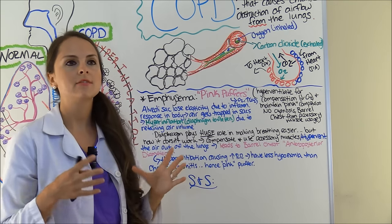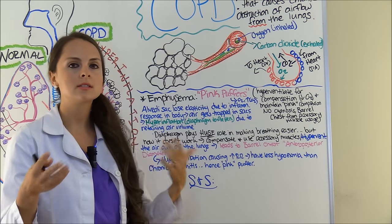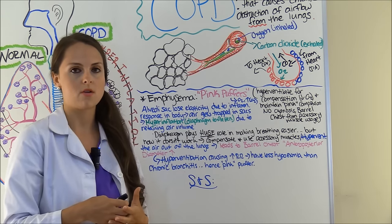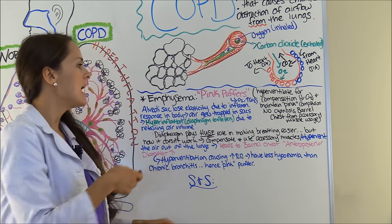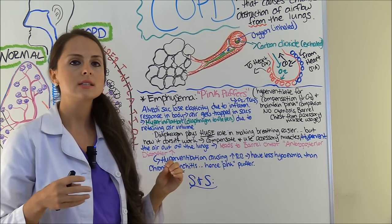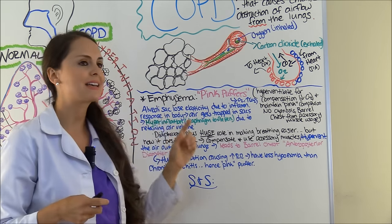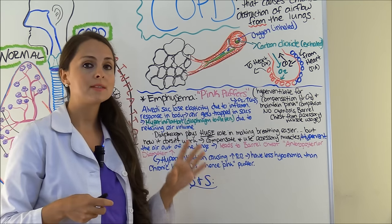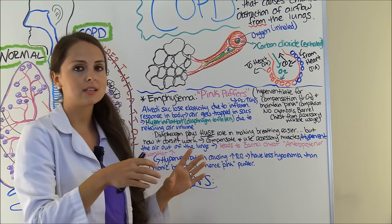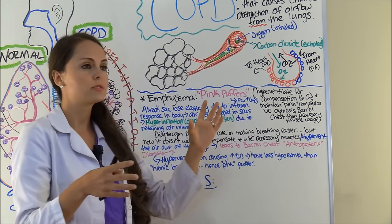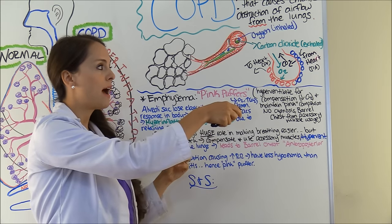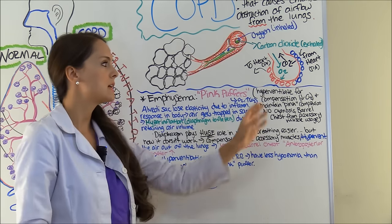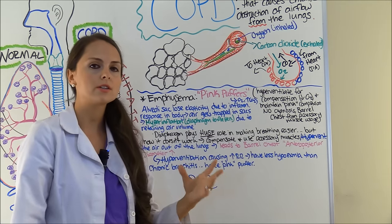With emphysema, say the patient is a smoker constantly inhaling that irritant. An inflammation process starts because of all that smoke affecting the alveolar sacs. The body actually releases a substance that causes those alveolar sacs to lose their elasticity. They won't be inflating and deflating properly — they become deformed and don't work. Without proper gas exchange, carbon dioxide is retained and oxygen cannot attach to the red blood cells to go through the body, resulting in low oxygen.